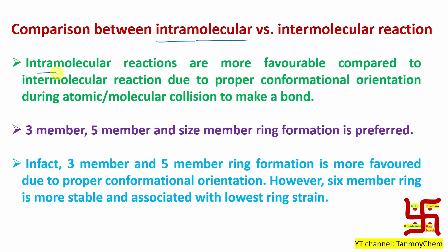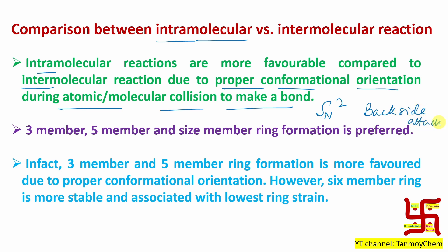Why? Intramolecular reactions are more favorable compared to the corresponding intermolecular counterpart because of proper conformational orientation during the collision of atoms or molecules to make a bond. Recall SN2 reaction — in SN2, you observe backside attack. Why backside attack? Because the nucleophile gives its electron density to the sigma star of the carbon–leaving group bond. Only backside attack can result in SN2 reaction. Front side attack will result in no reaction. So that part deals with proper conformational orientation, which is essential for bond formation.